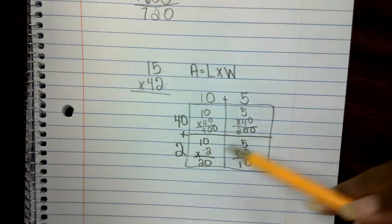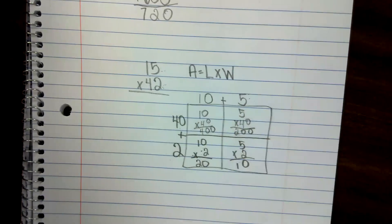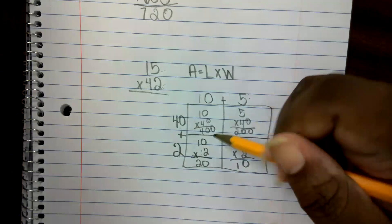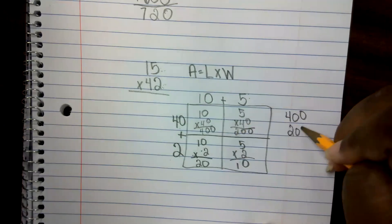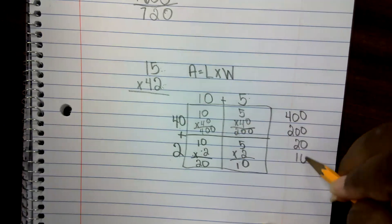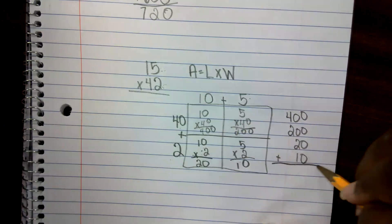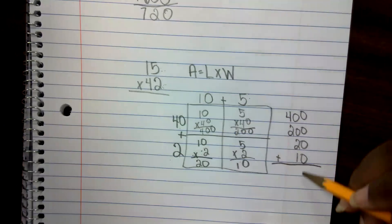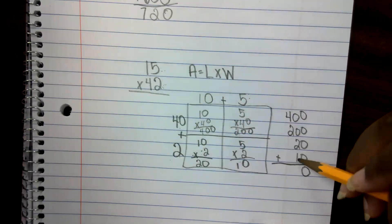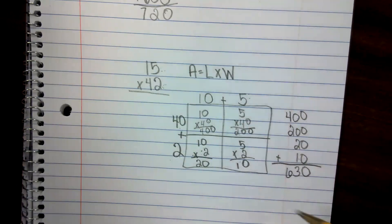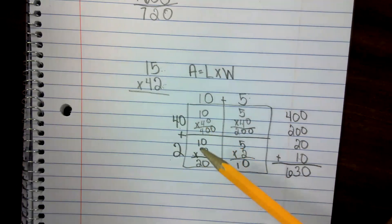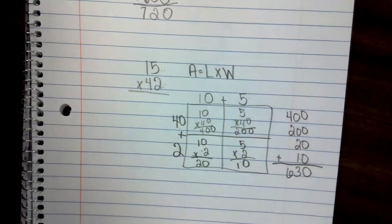Now these four boxes are called partial products — they are part of my answer to a multiplication problem, but not my final answer. So I'm going to take each one of these partial products — 400, 200, 20, 10 — and add them together. That gives me 630. So 15 times 42 is 630.